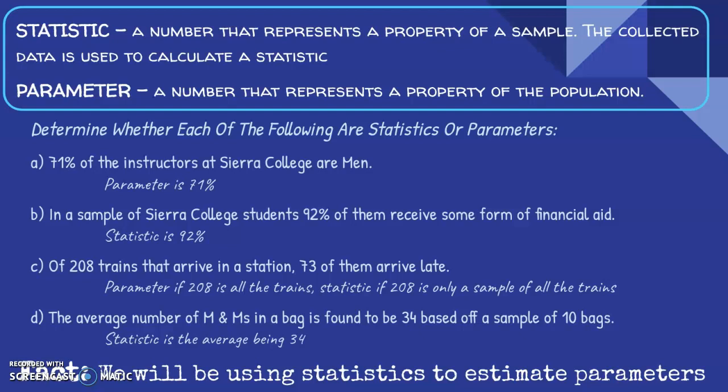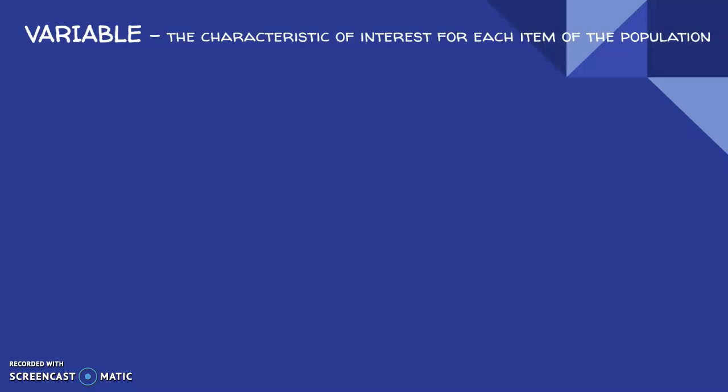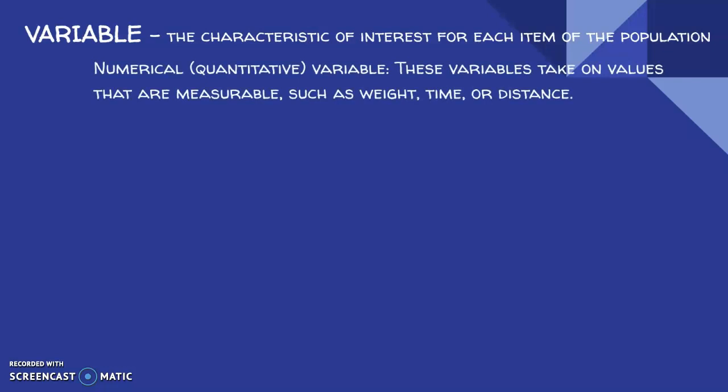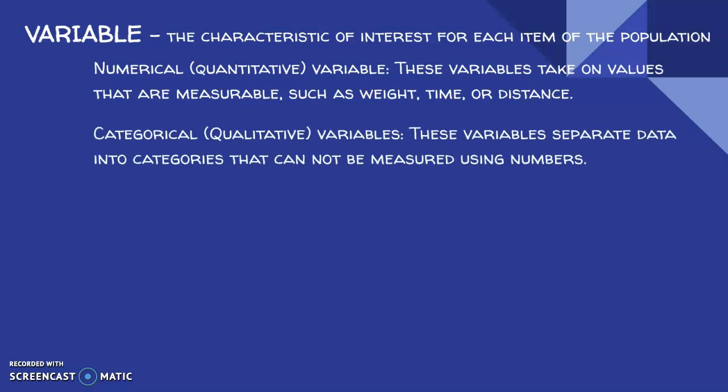So a vocabulary word here - variable. It is the characteristic of interest for each item of the population. We can break this down into two different types of variables: numerical and categorical. Numerical or quantitative variables, we're going to use this word quantitative referring to data in the future. These are variables that take on values that are measurable, such as weight, time or distance, whereas categorical - that name category tells you we're talking about qualities or qualitative variables. These variables separate data into categories that cannot be measured using numbers.